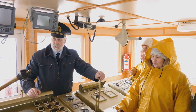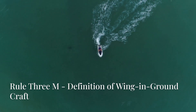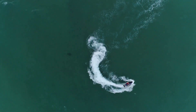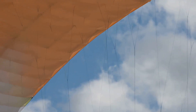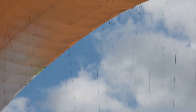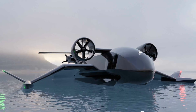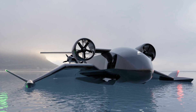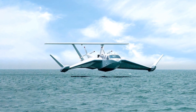Rule Three M — definition of a wing-in-ground craft: a craft that flies close to the surface using surface effect. These hover just above the water, almost like flying boats. Rare, yes, but they're included in the rules — so know they exist.